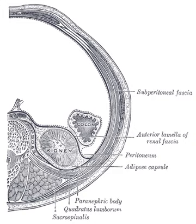The anterior pararenal space contains the pancreas, ascending and descending colon, and duodenum. The posterior pararenal space is bounded by the posterior leaf of the renal fascia and the muscles of the posterior abdominal wall. It contains only fat.